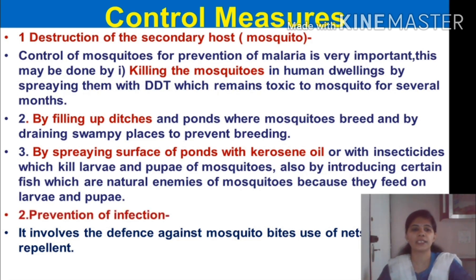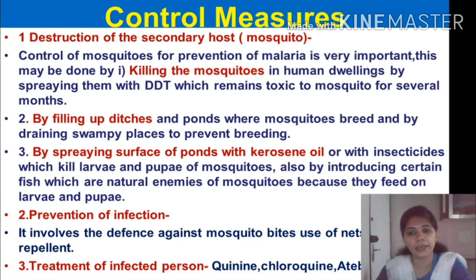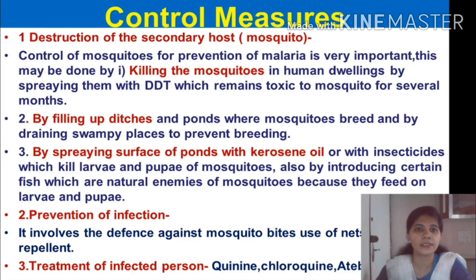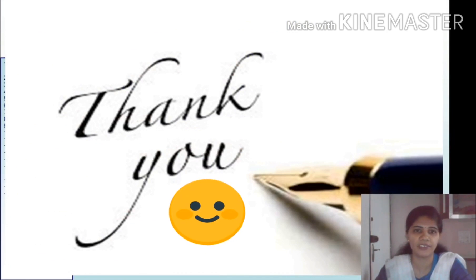Prevention of infection includes using nets, insect repellents, and other available protective items. The last line of control is treatment of the infected person — medicines such as quinine, chloroquine, and atebrine are useful to treat malaria patients. In summary, we have covered the life cycle of Plasmodium vivax, the asexual phase in the human body, the sexual phase in the female Anopheles mosquito, the pathogenicity caused, and how malaria can be controlled.